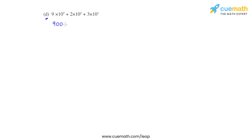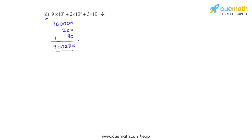For part d, we have 9 times 10 raised to 5, so that is 9 followed by 5 zeros. Plus 2 times 10 raised to 2, that is 2 followed by 2 zeros. Then we have plus 3 times 10 raised to 1, so that is 3 followed by 1 zero. We add up all these numbers and that gives us the answer as 900230. So the number for part d is 900230.